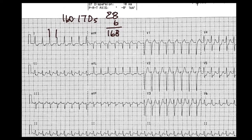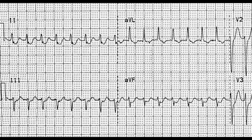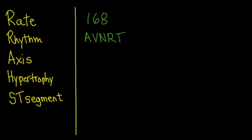This is a 10-second strip, so multiplying by 6 gives beats per minute. For rhythm, we look at each QRS complex for P waves and regularity. Zooming in, you can see a little P wave after each QRS complex — some notching after each one. It's very fast and very regular with P waves after the QRS, which is the pattern of AV nodal re-entrant tachycardia. So we have a rate of 168 and a rhythm of AVNRT.